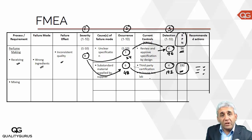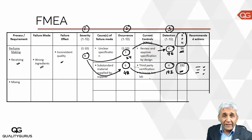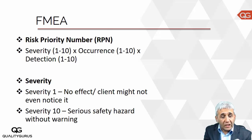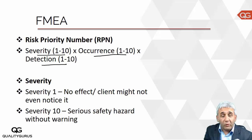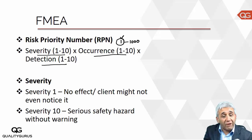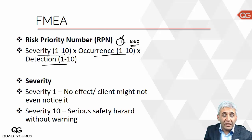Let's now look in a bit more detail at what severity, occurrence, and detection mean. Multiplying these three numbers gives the Risk Priority Number — the RPN. Each of the three components can range from 1 to 10, so the RPN can be anywhere between 1 and 1000: a value of 1 when all three are rated 1, and 1000 when all three are rated 10.